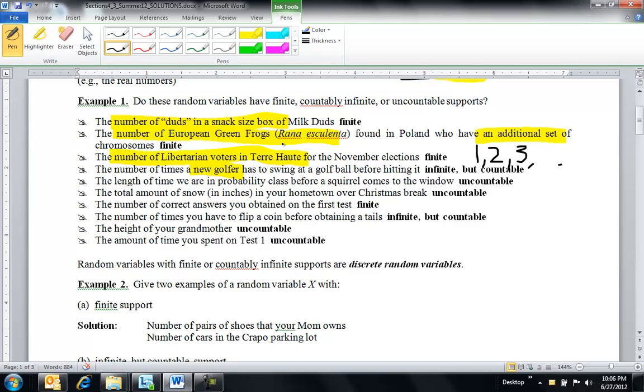Let's give you the opposite. Let's give you an uncountable. The height of your grandmother - it's anywhere in a range, right? An interval, somewhere in an interval. The amount of time you're going to spend on test number one. Again, I agree it's probably in a finite range, but it's anywhere in that interval. It's any real number in an interval between, let's say, 0 and 60 minutes. So the type of support is going to influence the way you model the mass function or density function of your random variables.